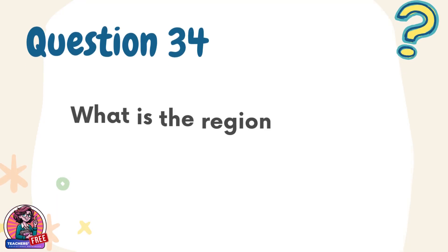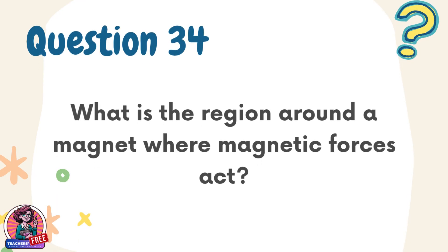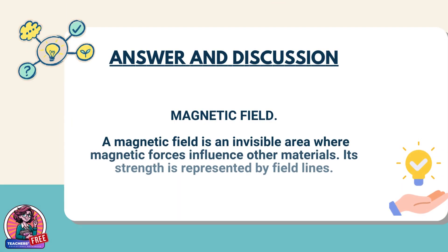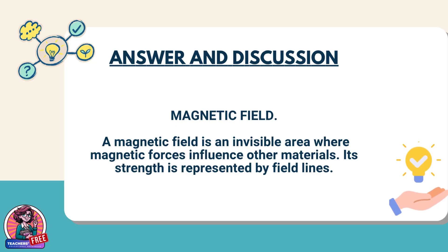Question 34. What is the region around a magnet where magnetic forces act? Answer: magnetic field. A magnetic field is an invisible area where magnetic forces influence other materials. Its strength is represented by field lines.